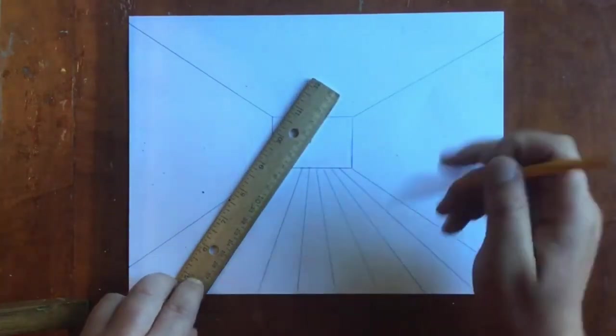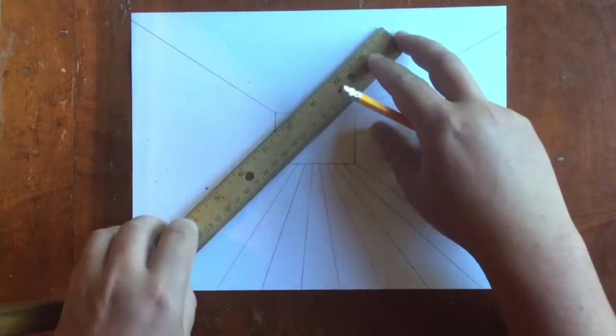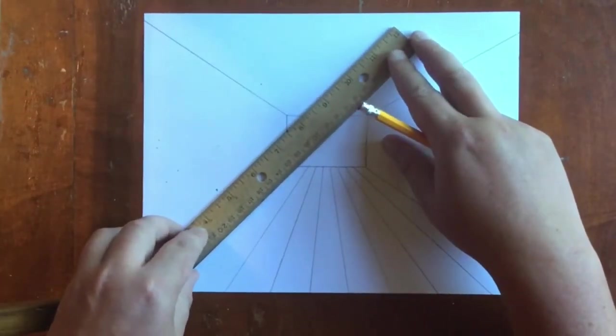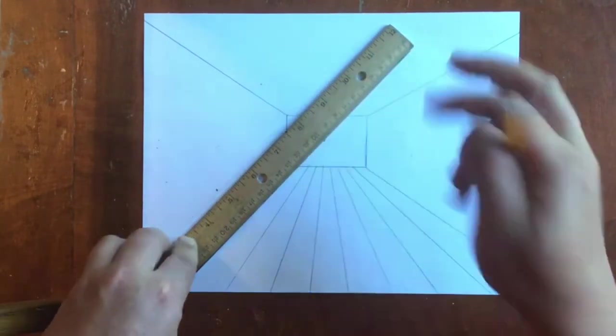I'm making lines from the bottom of the rectangle going off the paper, but each time my ruler is still touching the vanishing point.